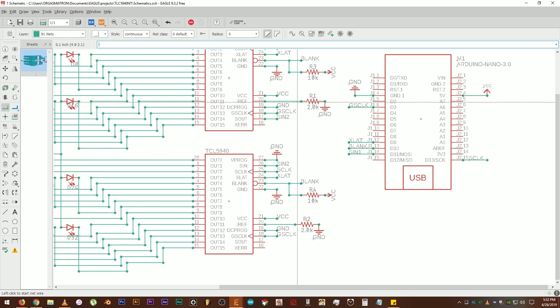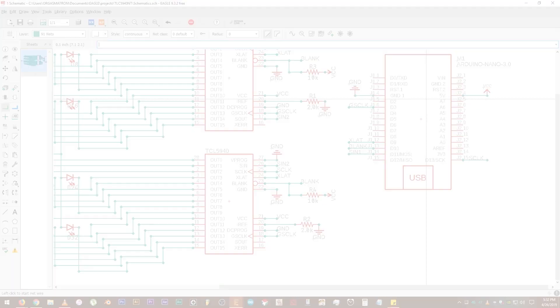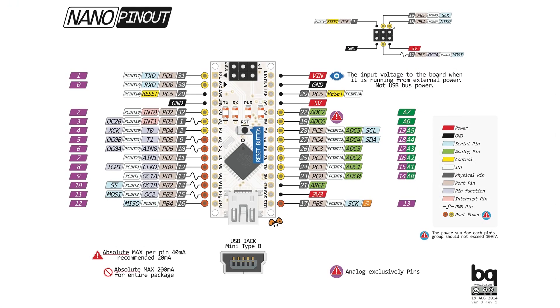IREF pins of both the ICs should have a 2K resistor that are connecting them to ground. DCPROG or DCPRG pin is connected to ground. And GSC-LK is connected to pin number 3. Also, pin numbers 3, 9, 10, and 11 are all PWM pins according to this Nano Pinout Diagram.